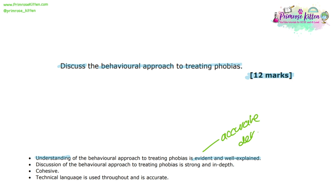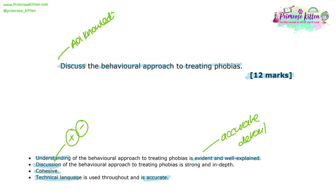There then needs to be a discussion of the behavioural approach to treating phobias, and this should include an evaluation considering the strengths and limitations of the treatments. There should be a clear structure to the response and technical language should be used throughout and always in an appropriate way. Because this is a discuss question, both AO1 knowledge and AO3 evaluation marks are available — six AO1 marks and six AO3.